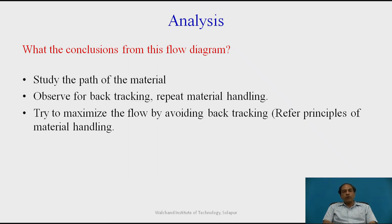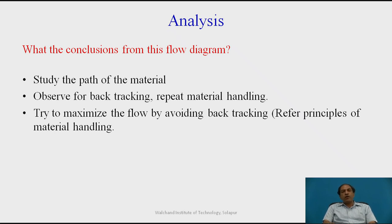Once you have understood it, we have to study the path of the material and observe for backtracking. If any backtracking is observed or repeated material handling is taking place, you have to note down which particular two workstations are involved. We have to analyze why that backtracking is happening — whether the layout can be changed, whether it was a temporary movement for a particular batch, and what the reason for the backtracking is, including whether any waiting of the job is involved.